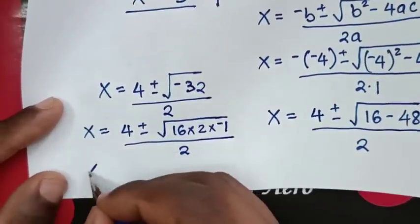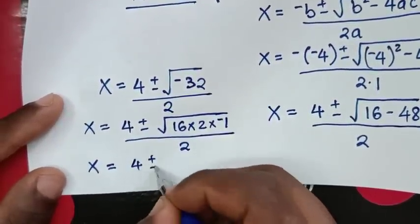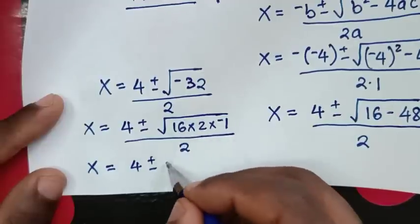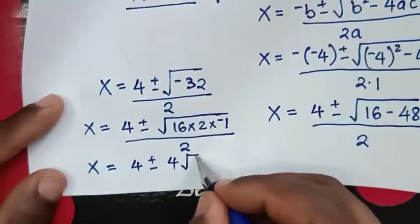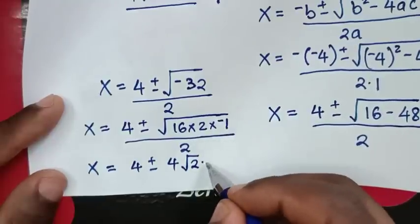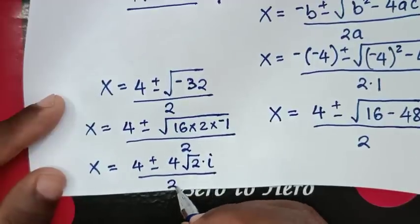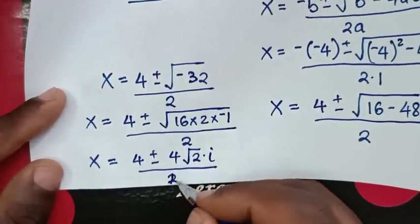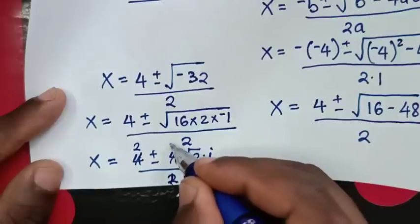We simplify: square root of negative 32 is the same as square root of 16 times 2 times negative 1, which equals 4 times square root of 2 times i. So it will be 4 plus or minus 4i square root of 2, over 2.